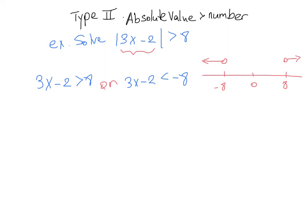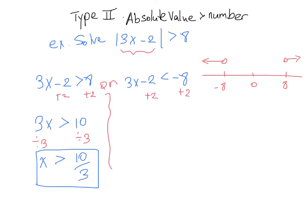So let's do the one on the left side first. We can add 2 to both sides, and we get that 3x is greater than 10. Now we can divide both sides by 3, and we get that x is greater than 10 over 3. And that is one of our solutions. On the other side, we can add 2 to both sides to get that 3x is less than negative 6. And we can divide both sides by 3 to get that x is less than negative 2. And that is our other solution.